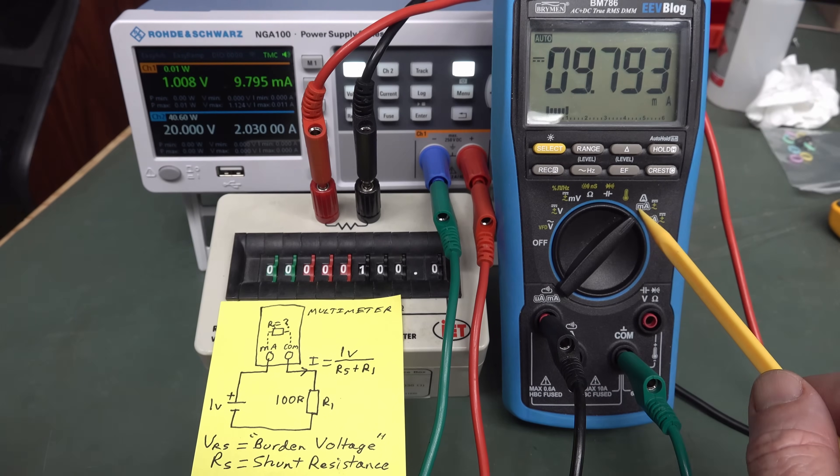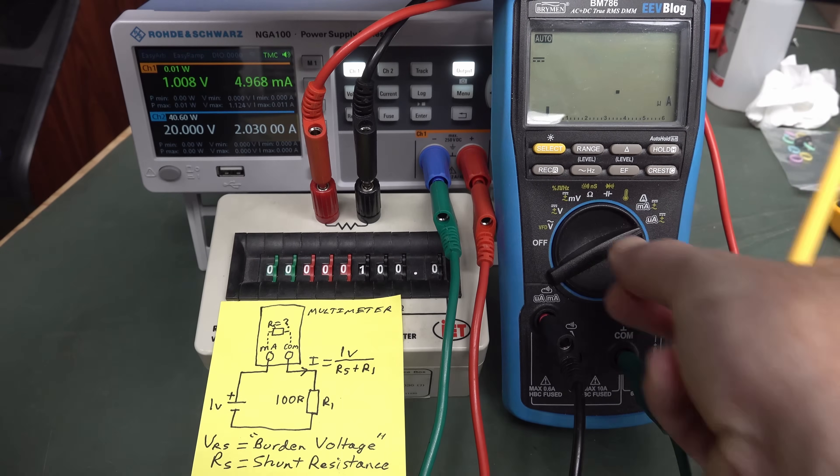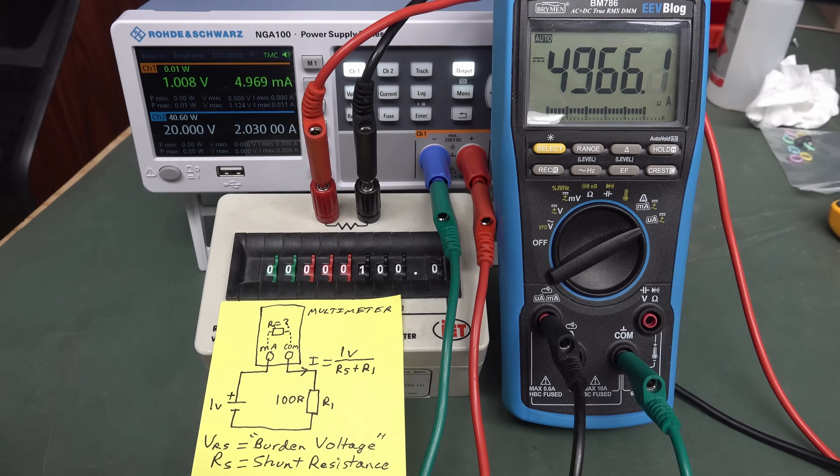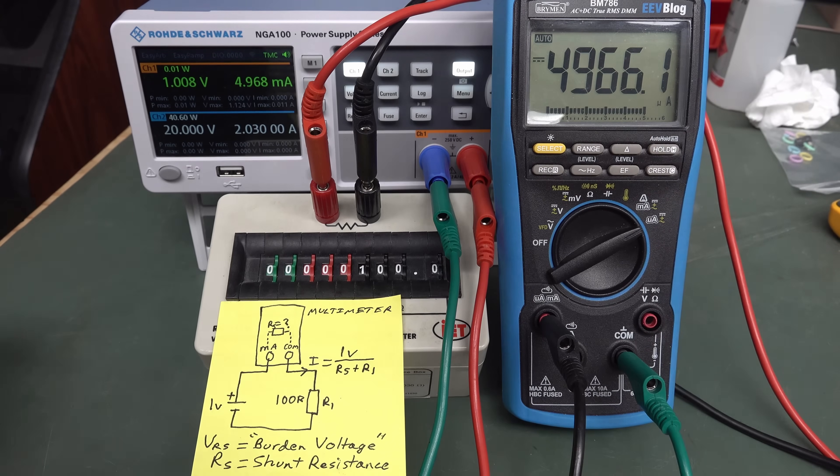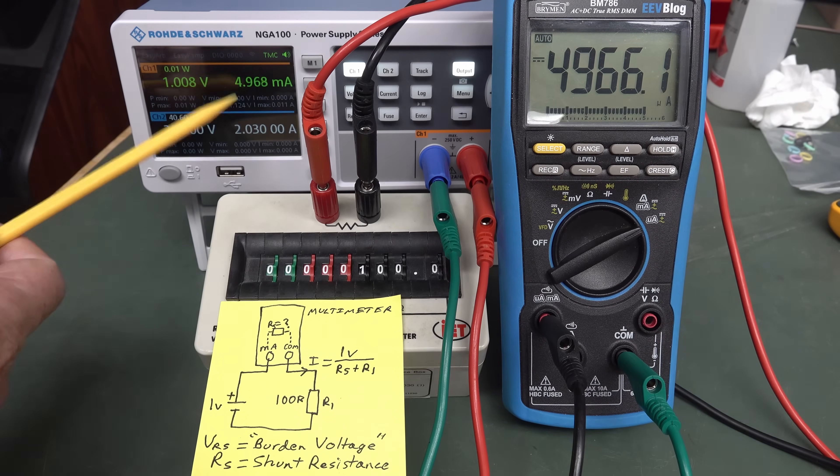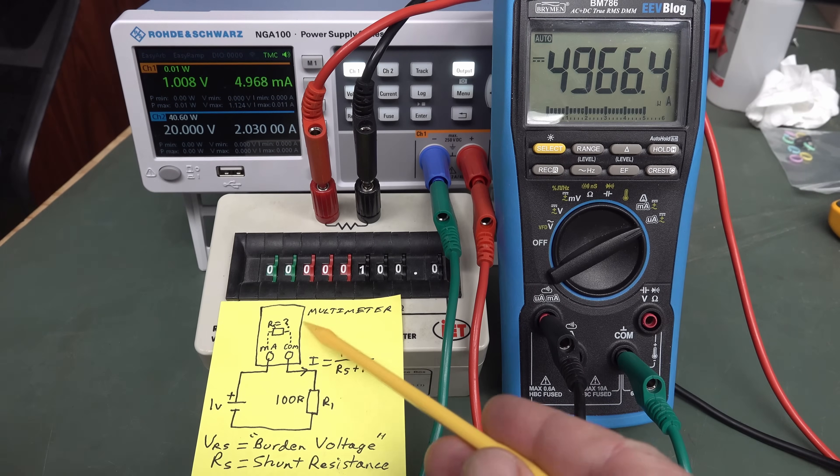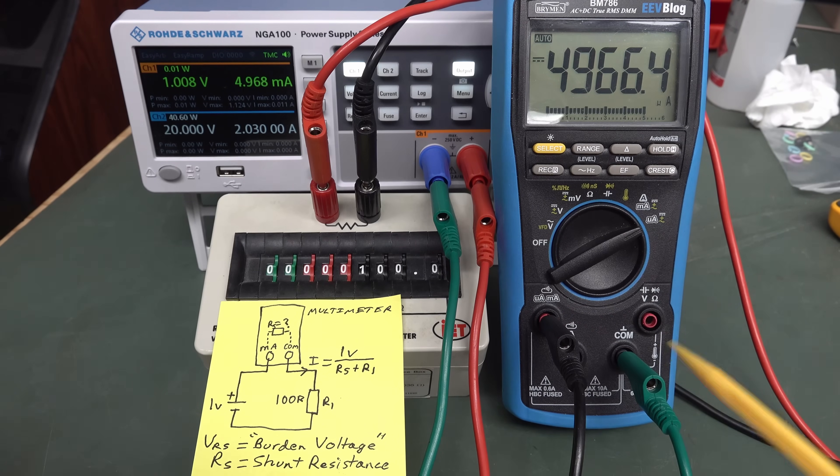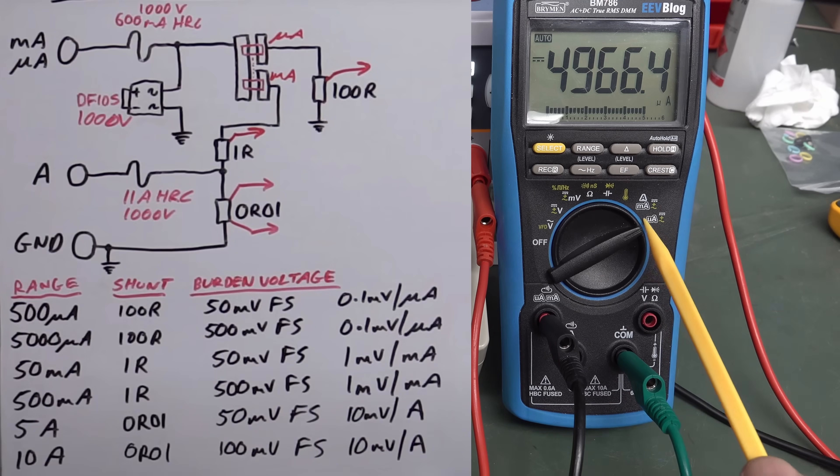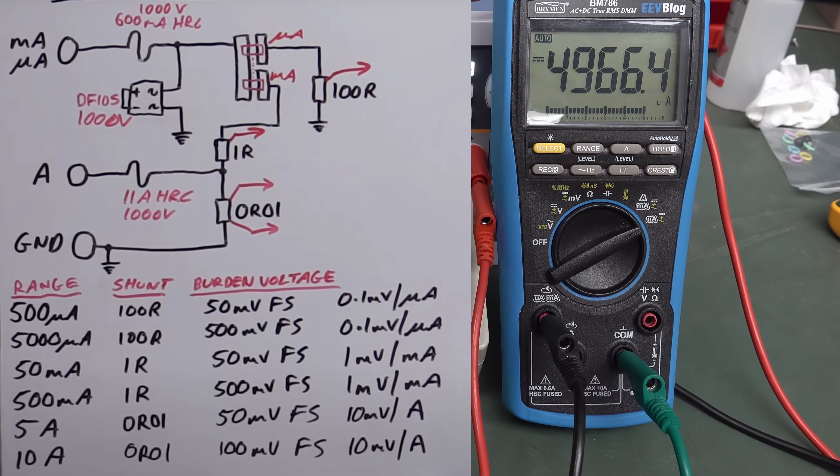But check this out. What if I change from milliamp range over here to microamps? We should still be able to measure that 9.8 milliamps, but what? Look, we're getting 4,960 microamps, which is 4.96 milliamps. And that's what we're getting over here, 4.96. Why is it now changed again? It's because the shunt resistance inside your multimeter across your terminals, or the burden voltage, is going to change with the current range that you actually use. So microamps is going to have a much higher resistance internally than what your milliamp range does.